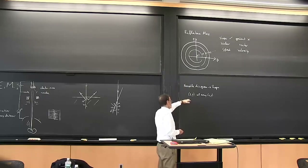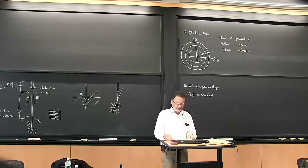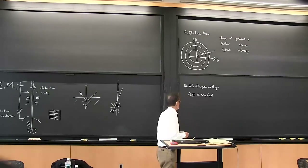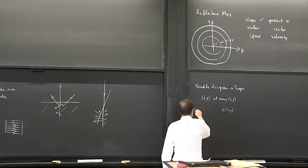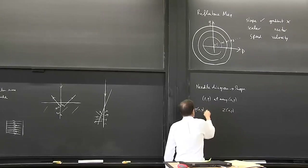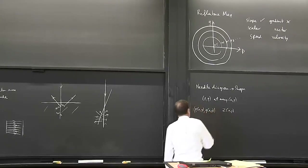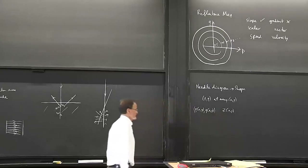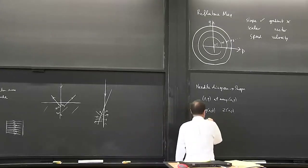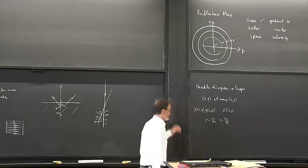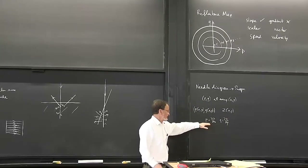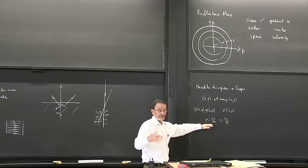For example, we get the needle diagram from photometric stereo. In photometric stereo, we're not computing Z as a function of X and Y - what we're getting instead is P and Q as a function of X and Y, remembering that P is dZ/dX and Q is dZ/dY. That's our estimate based on our image brightness measurements.